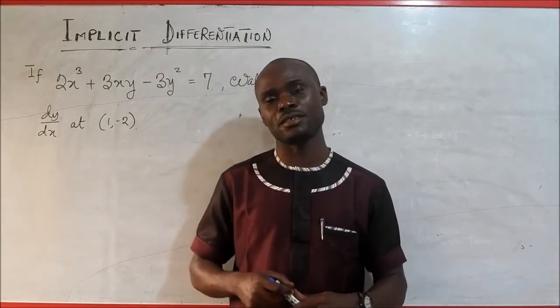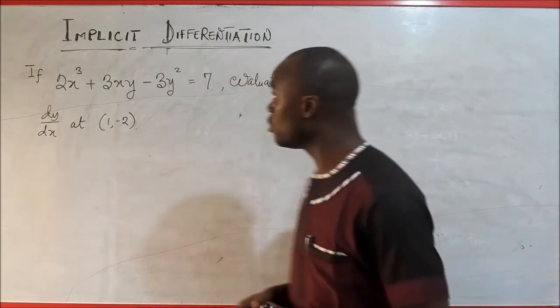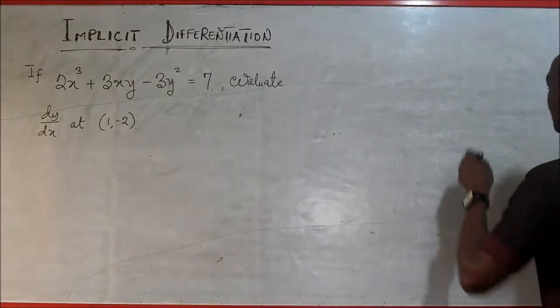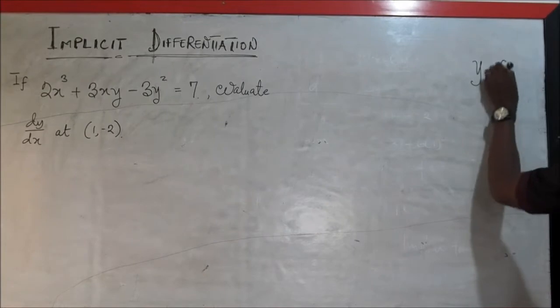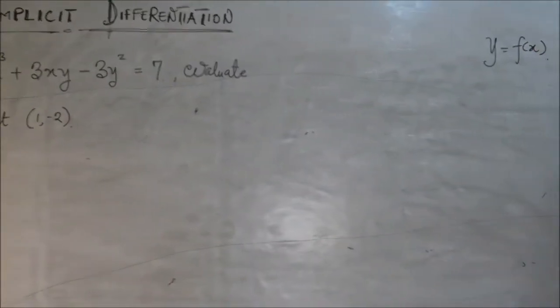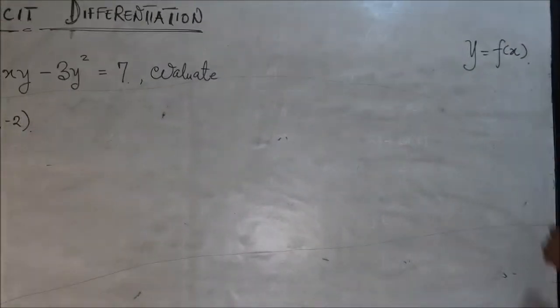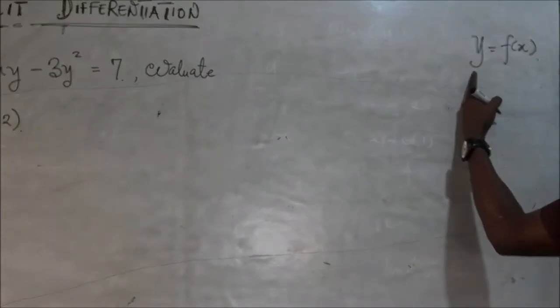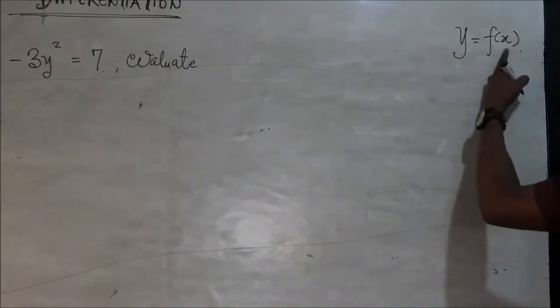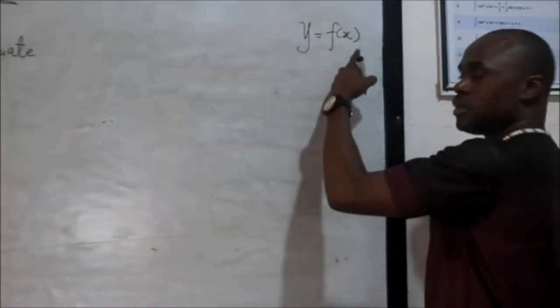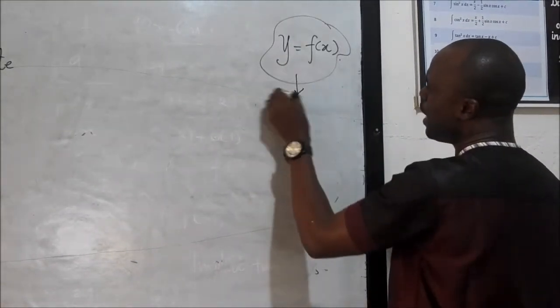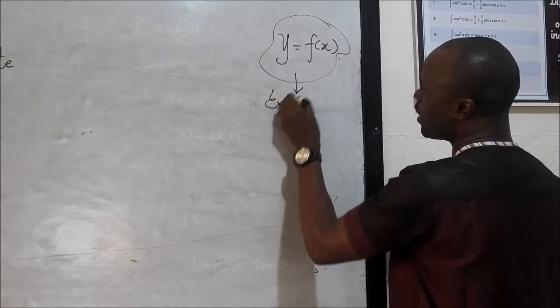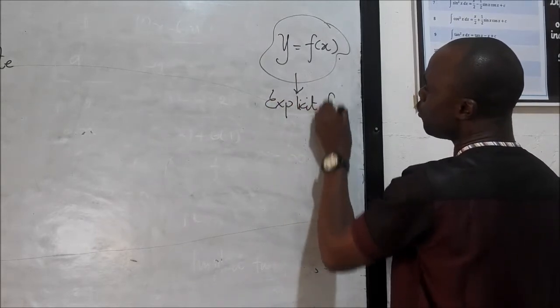What do we really mean by implicit differentiation? In calculus we must understand what we mean by an explicit function. So here we have a function y equals f of x. This function is actually called an explicit function because we simply have one dependent variable and we have the independent variable on either side of the equality sign. So this is referred to as the explicit function.